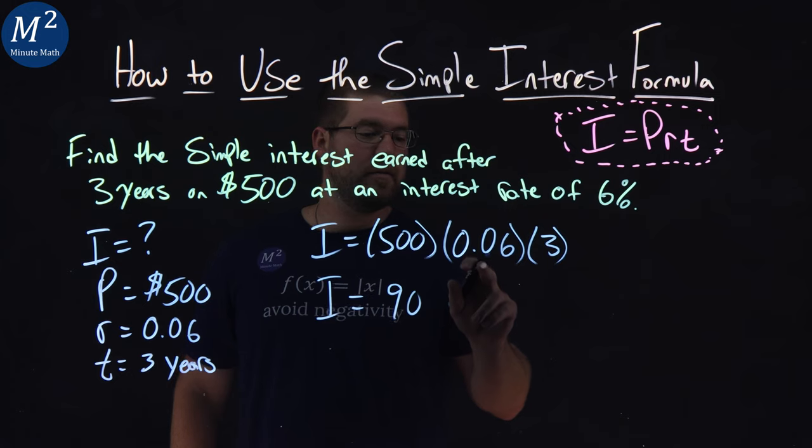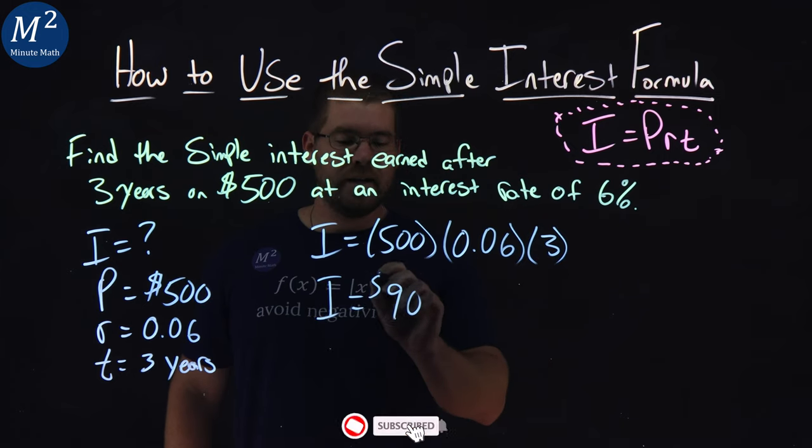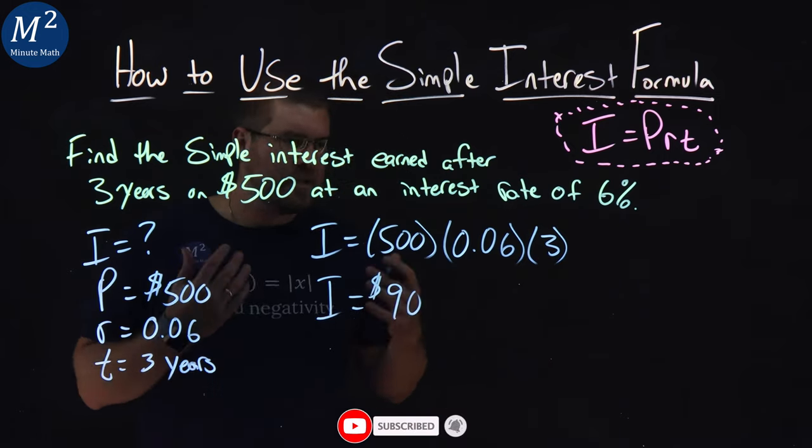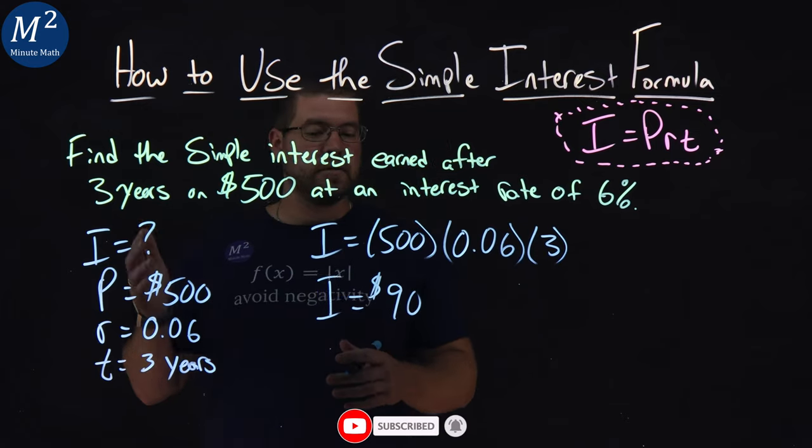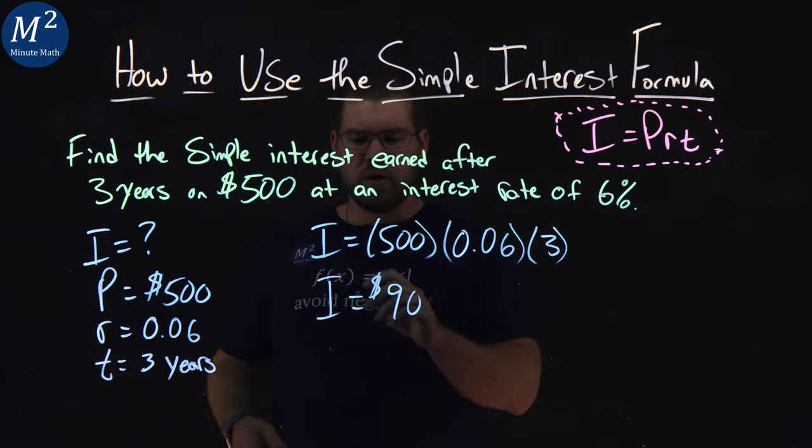So 500 times 0.06 times three is 90. Now, that means the interest that we've earned over the three years was $90. It's a simple interest earned.